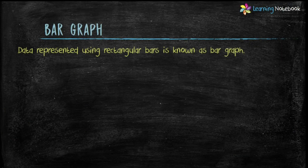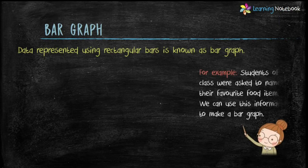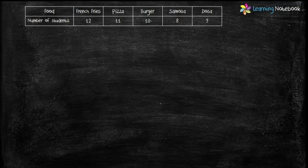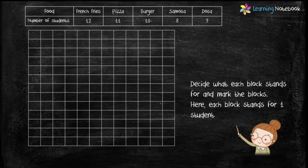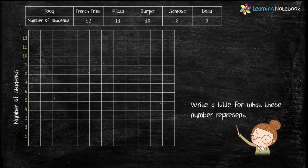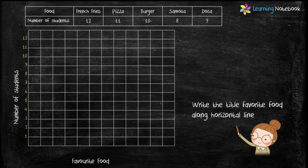Data represented using rectangular bars is known as a bar graph. Let's take the same previous example and draw a bar graph using that information. First, decide what each block stands for, then mark the blocks accordingly. Here each block stands for one student, so let's mark the blocks as 1, 2, 3, 4, and so on. These numbers represent the number of students. Now let's write the title for the horizontal line, which is 'Favorite Food.'